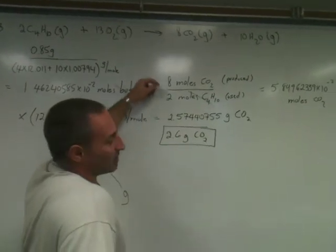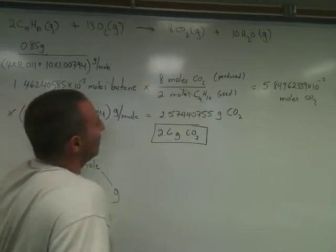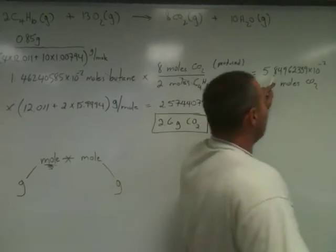The ratio is 4 to 1 because 8 over 2 reduces to 4 over 1. So 4 times this number gives you the number of moles of carbon dioxide that is formed.